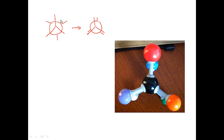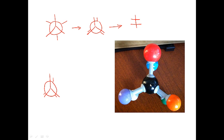The reason you have to convert the staggered into the eclipsed in order to then convert that eclipsed form into the Fischer projection is what I'm going to show you in these pictures. Here's an eclipsed Newman projection — on the front carbon you can see I have a red, an orange, and a purple group. In the back I have a white, a green, and a blue group. Now I'm going to convert this to a Fischer projection.